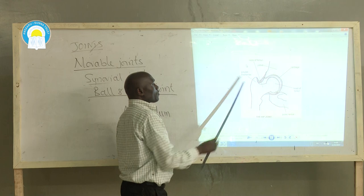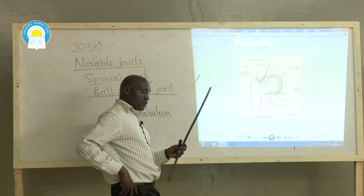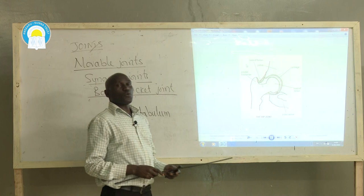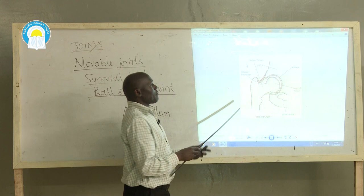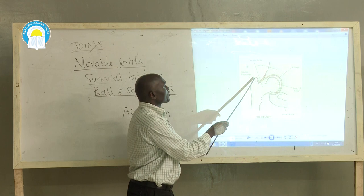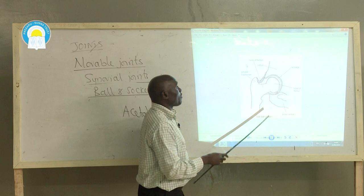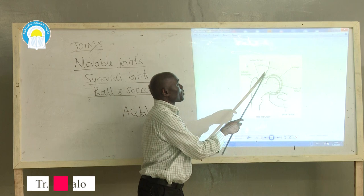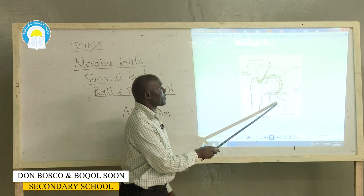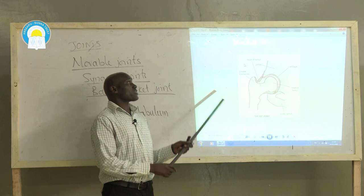At the ball and socket joint of the hip region, we have thread-like structures known as ligaments. The ligament on the upper part attaches to the greater trochanter, and on the lower side we have the lesser trochanter. These provide surfaces for attachment of ligaments, which attach femur to the pelvic girdle, ensuring bones remain in position during movement.